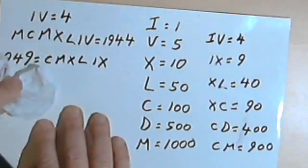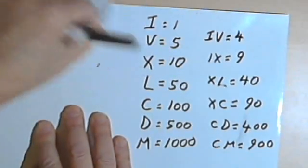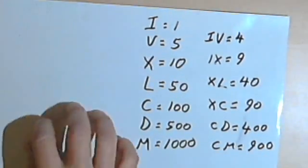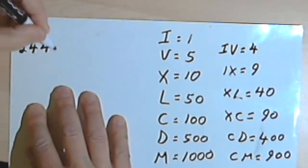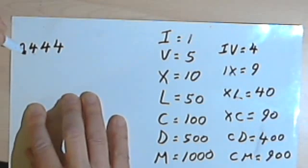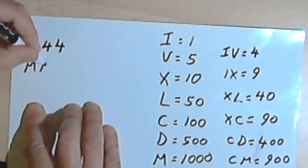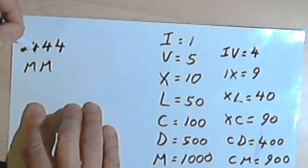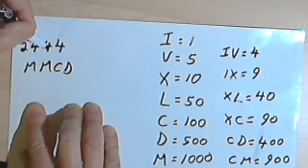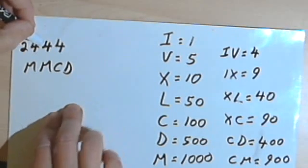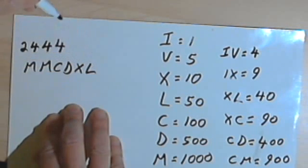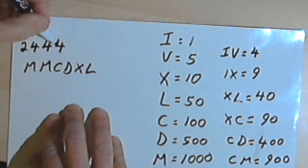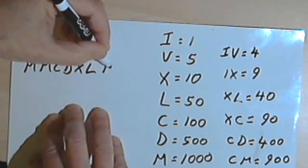Let me make some room and we'll do a bigger number. 2,444. Okay, so the 2,000 is easy, that's just 2 M's. 400 is 100 less than 500, so that would be CD. 40 is 10 less than 50, so that would be XL, and 4 is 1 less than 5, so that would be IV.